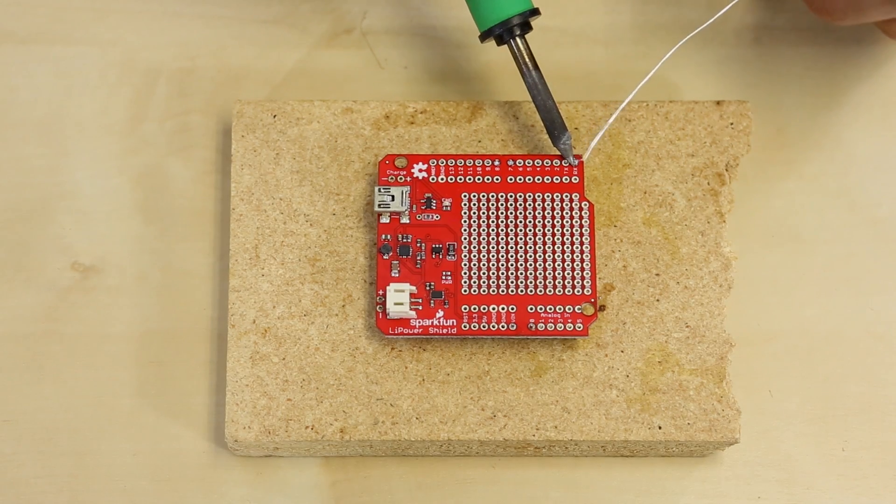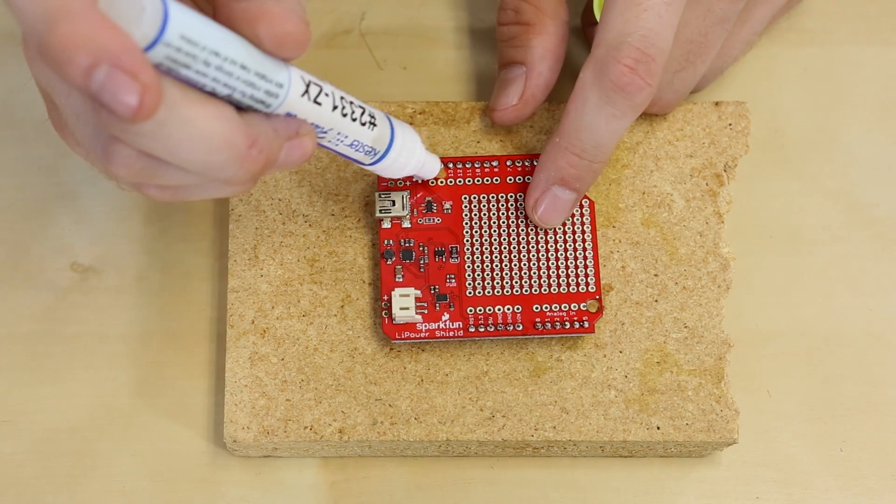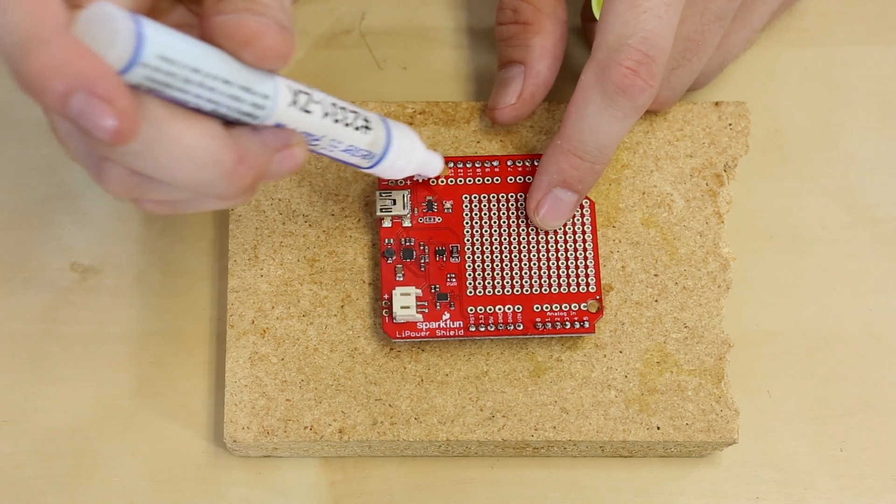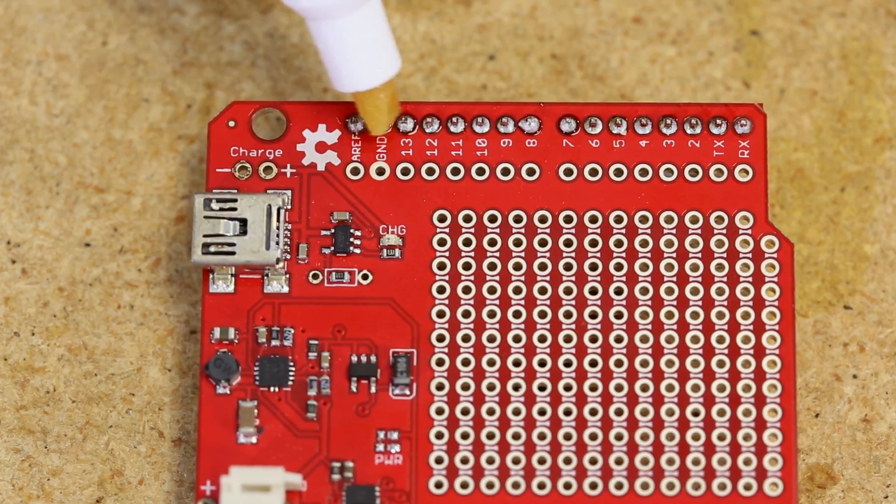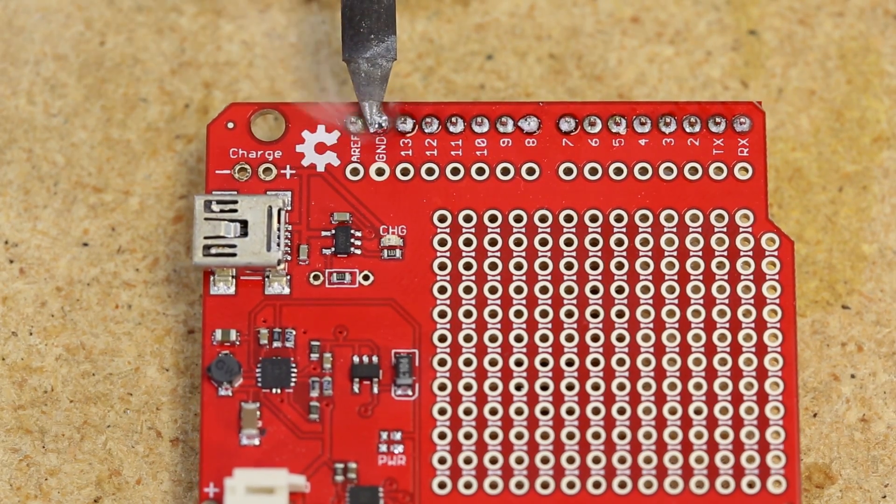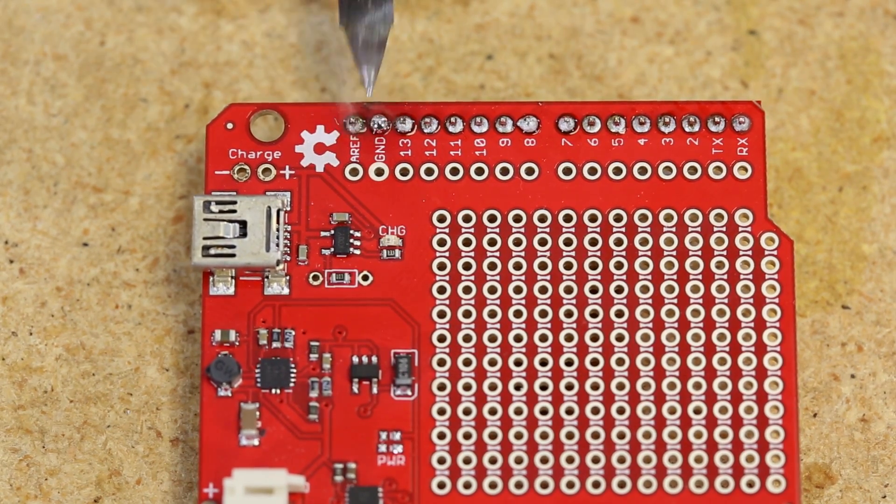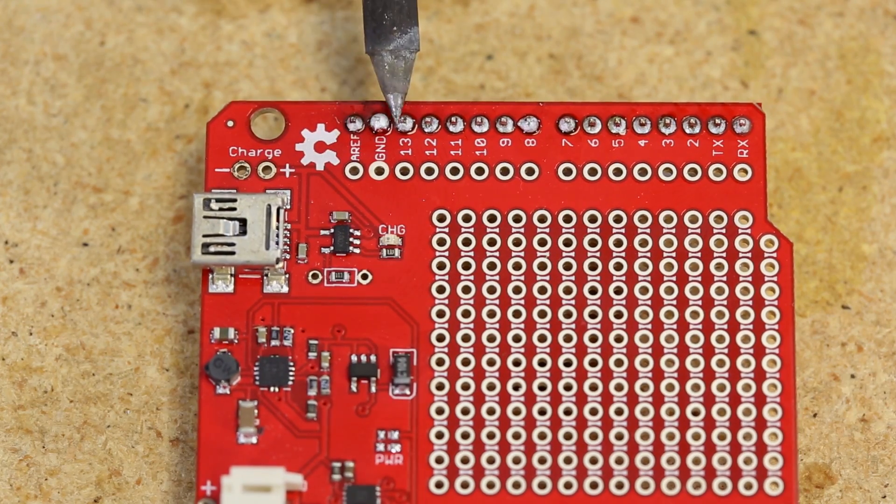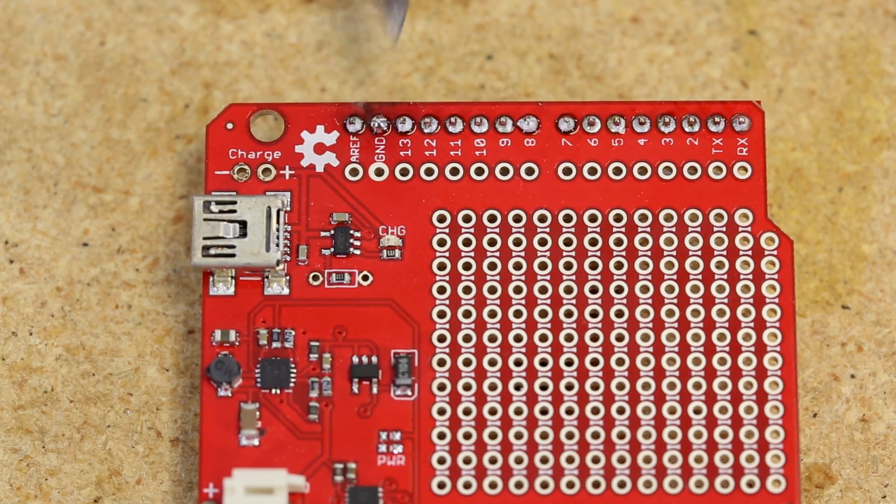Flux can also come in handy when soldering through hole components. Ground pins are particularly stubborn because they sink more heat than the rest of them because the heat is drawn into the ground plane within the PCB. To remedy this we simply dab some flux onto that stubborn pin and apply more heat to get a perfect solder joint.